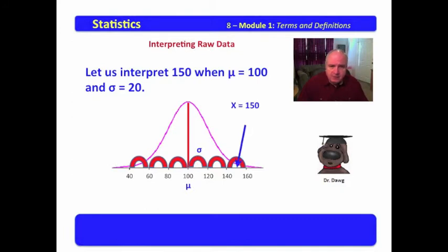X equals 150 would occur right here. X equals 150 is above the mean and looks to me like it's about two and a half standard deviations above the mean.